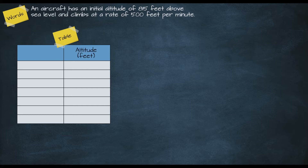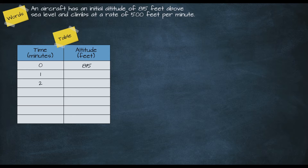We can also model our relationship using a table of values. Since we're modeling altitude, we'll label our right-hand column 'altitude,' and because altitude depends on how much time has passed, we'll label the left-hand column — the independent variable — 'time.' For our first value, at a time of zero the altitude is 815 feet. Using one-minute increments, the altitude at one minute is found by adding 500 to 815 feet, giving us 1315 feet.